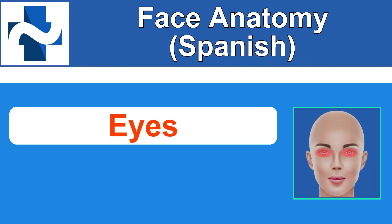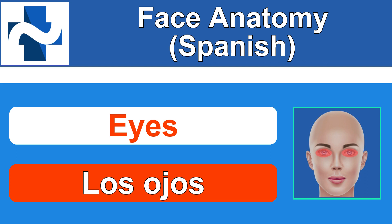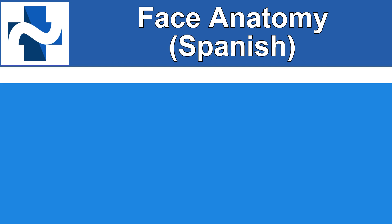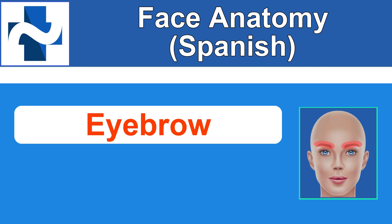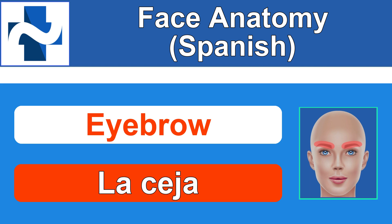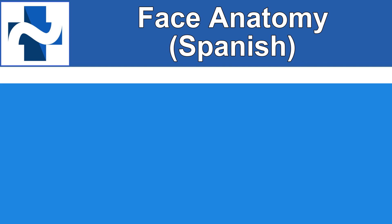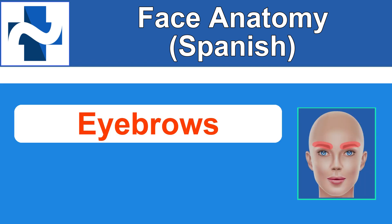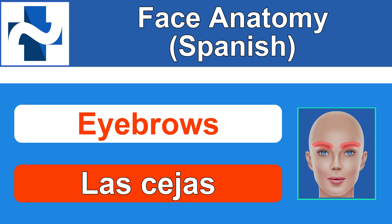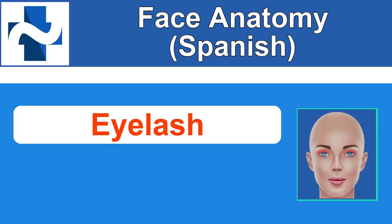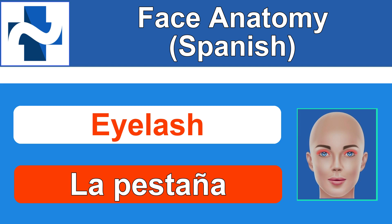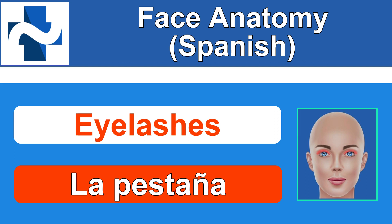The next one is eyes, plural. How do you say the eyes? Los ojos. Los ojos. Eyebrow — singular. And just for quick practice, how would you say eyebrows, plural? Las cejas. Las cejas. What about eyelash? La pestaña. La pestaña. And since that would probably be plural more often, how do you make that one plural? Las pestañas. Las pestañas.